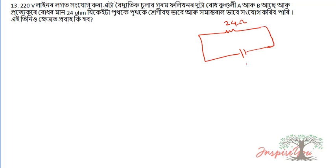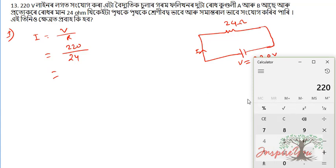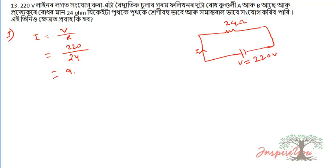Case 1: connected to the 220 volt line. The 24 ohm resistor — applying V = IR, so I = V/R. V is 220, R is 24. 220 divided by 24 is equal to about 9.16 to 9.17 ampere.